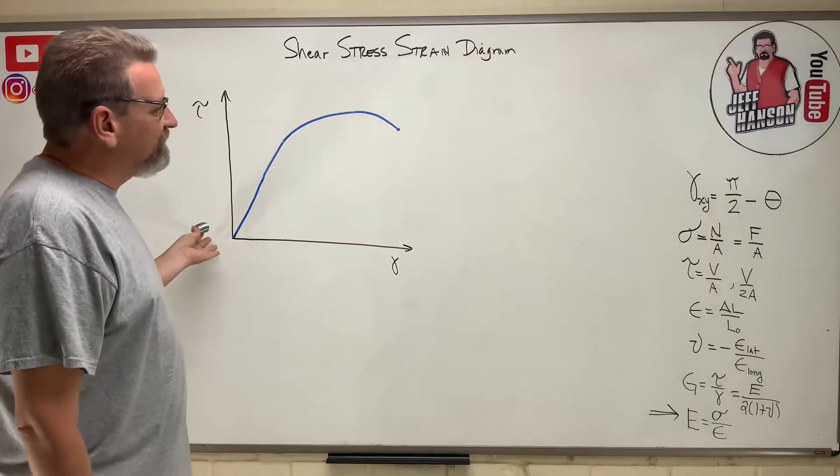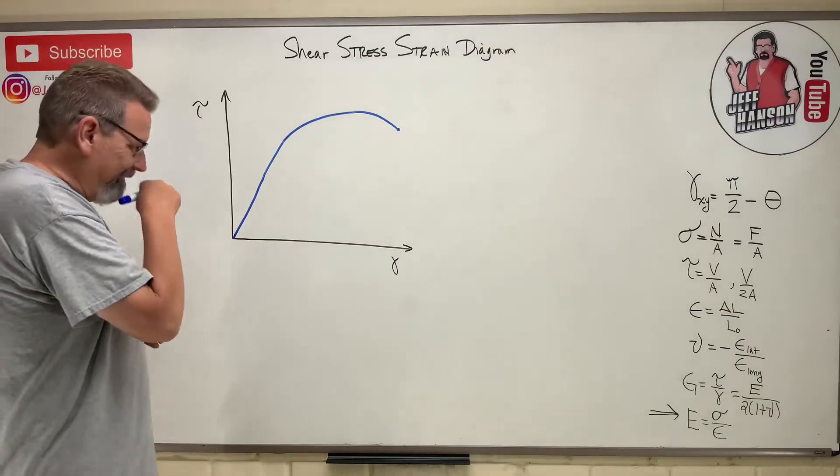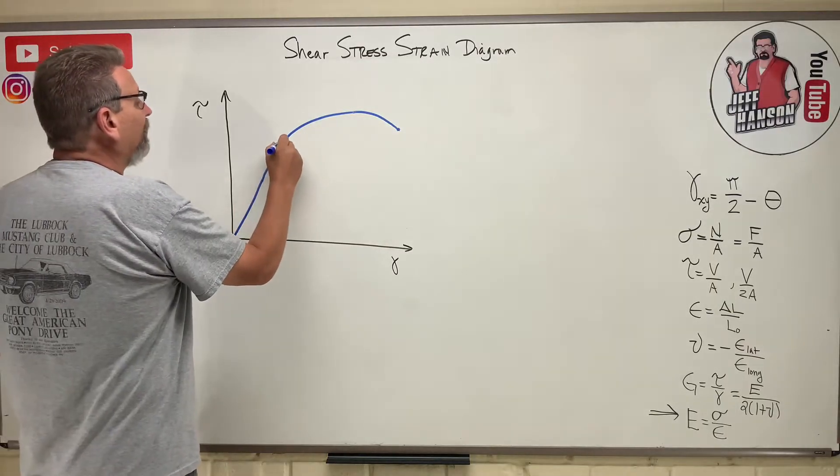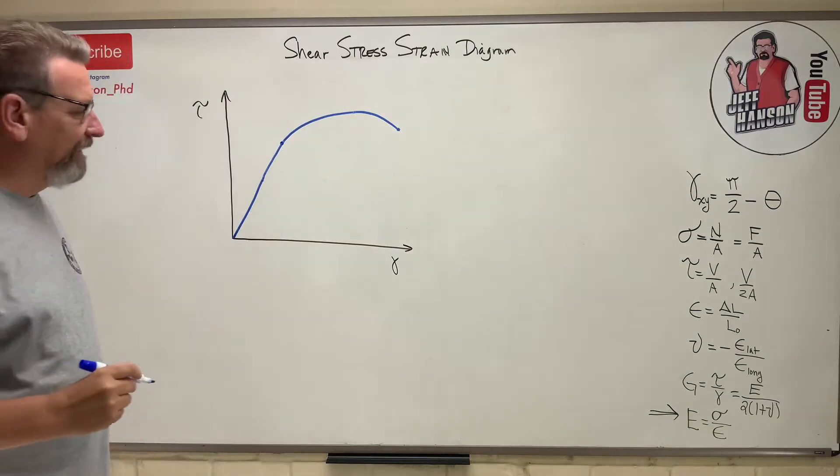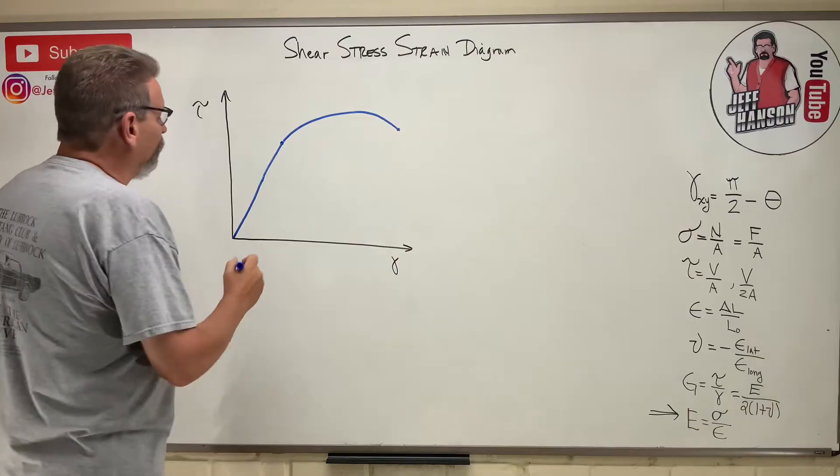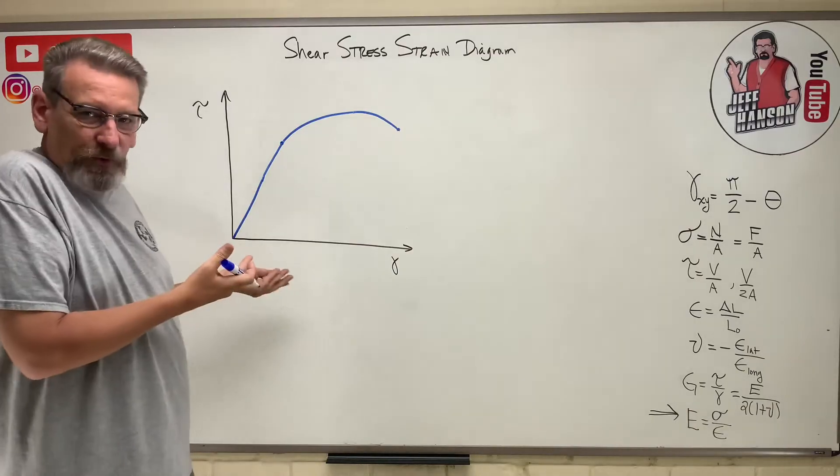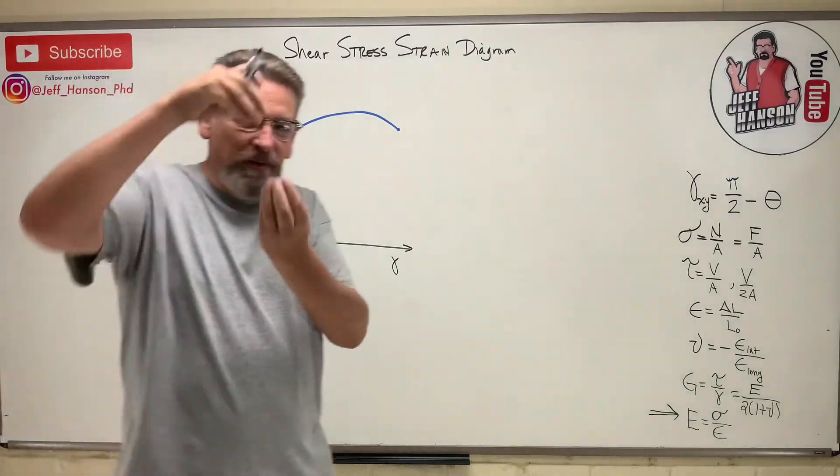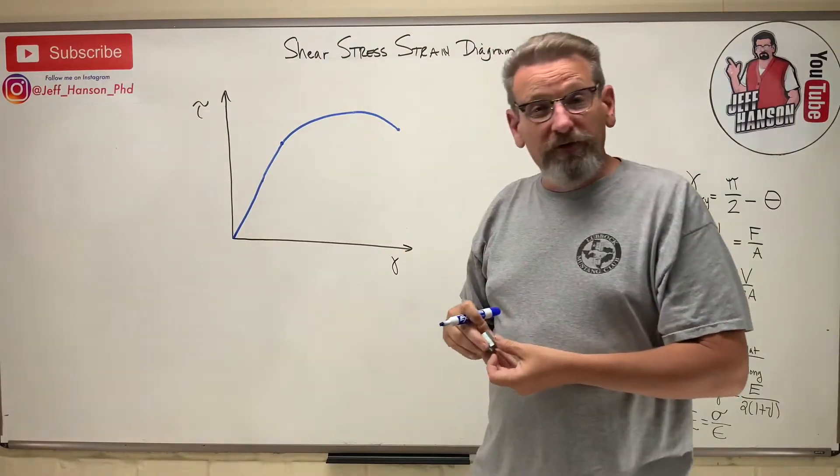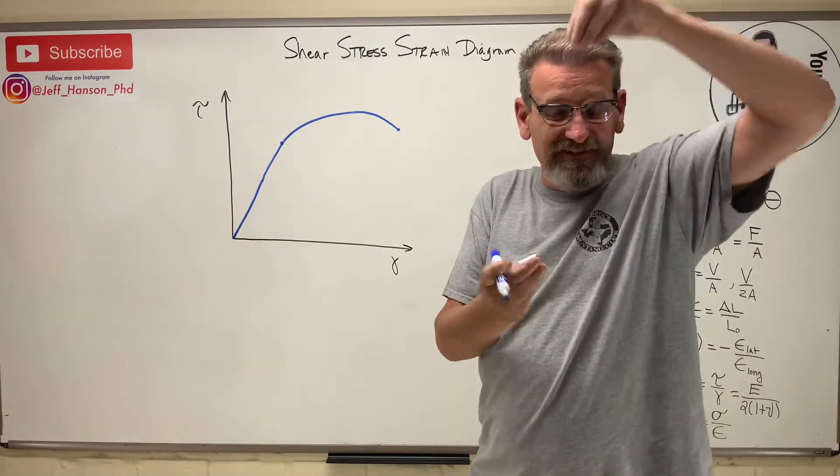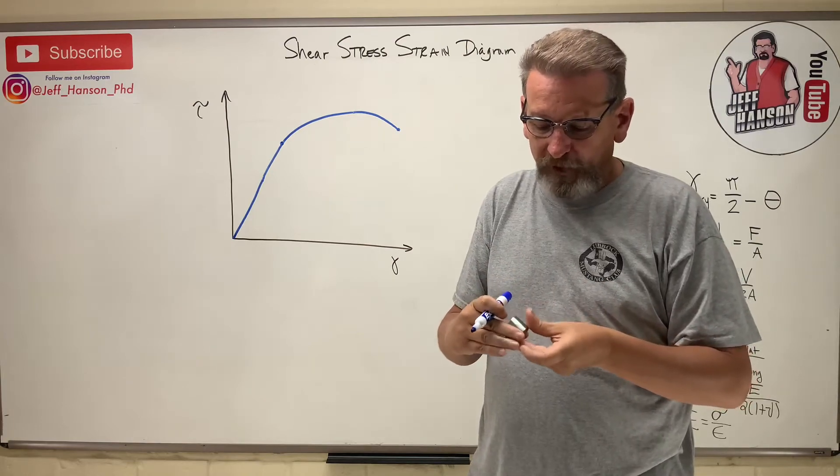So this is very similar. It's also very similar in that it has a linear portion of the line. Now where does this graph come from? The last one I gave, remember I gave my silly putty example, but for the dog bone samples, the tensile testing, where does this one come from?